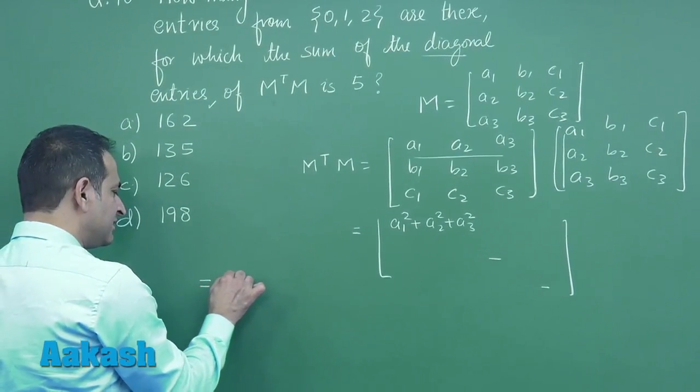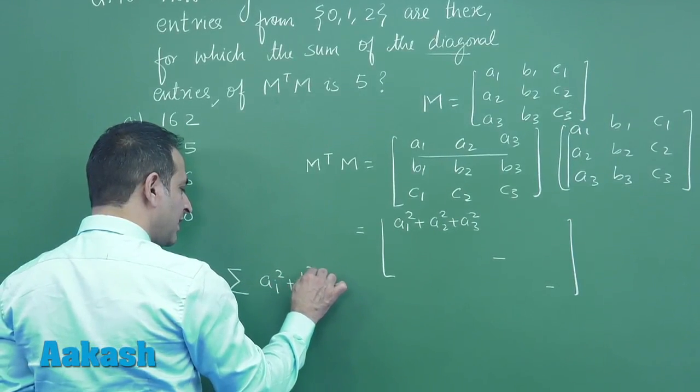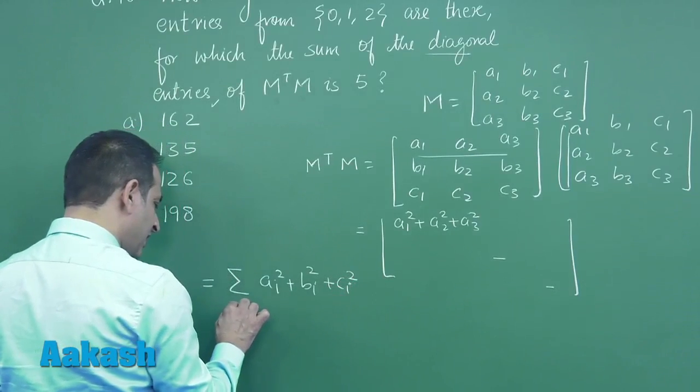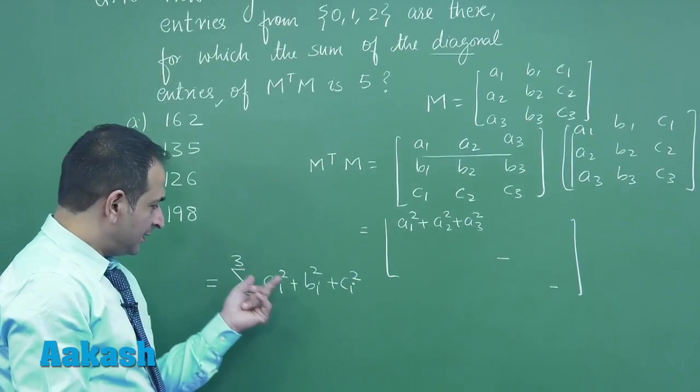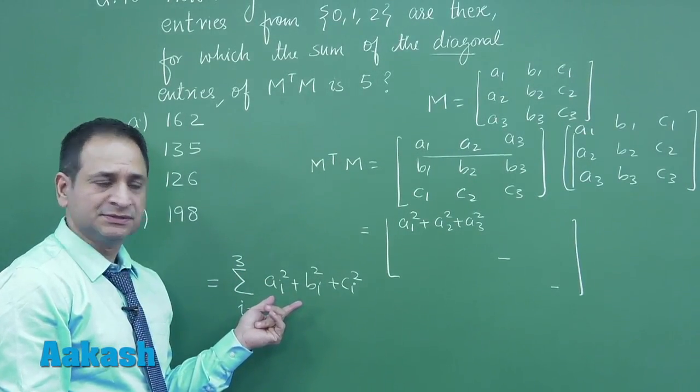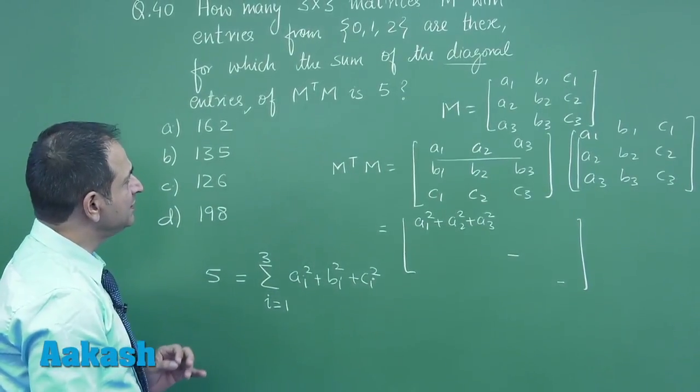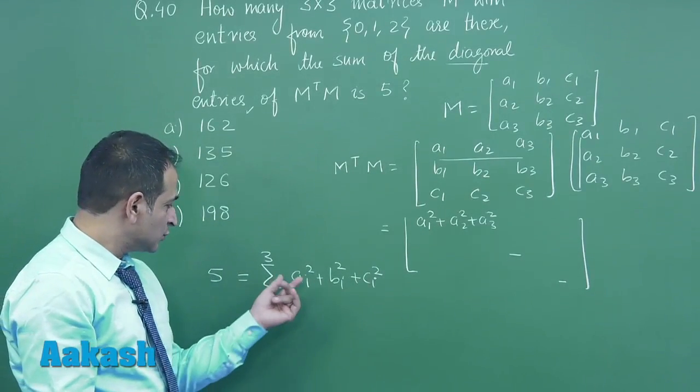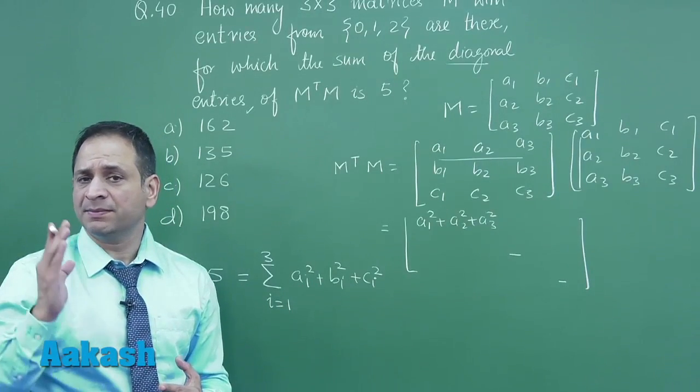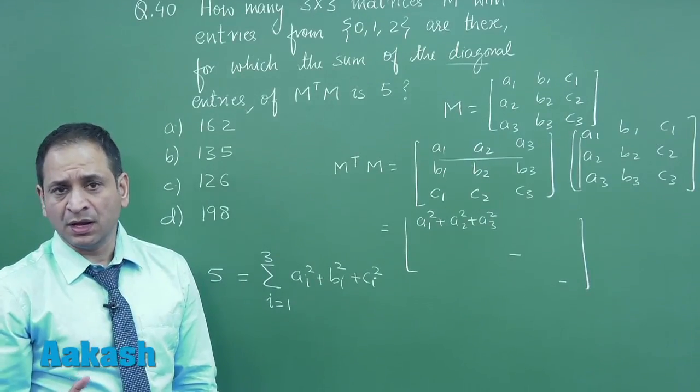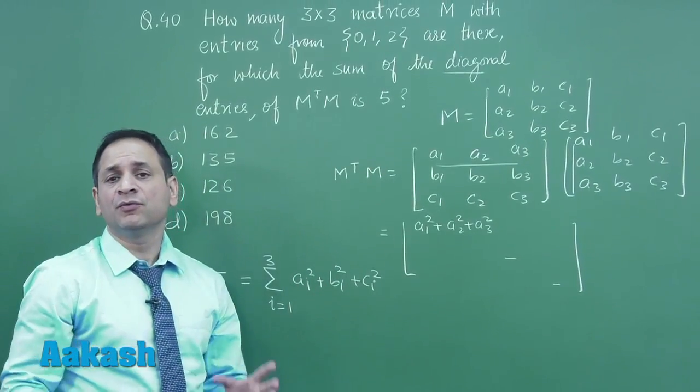So that means the sum of diagonal entries is sigma Ai squared, Bi squared, Ci squared, where i varies from 1 to 3. That means these are total 9 in numbers and the sum is given, that is equal to 5. Now possible values are 0, 1 and 2. That means any value here can be equal to 0, 1, and 2. Now if we square it, what values will come to us? We have value 0, 1 and 4.